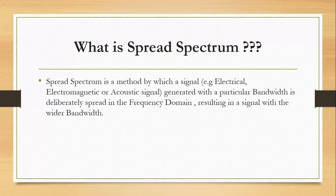So now, what is spread spectrum? Spread spectrum is a method by which a signal—it can be electrical, electromagnetic, acoustic, anything—which is generated with a particular bandwidth is deliberately spread in the frequency domain. So the original signal which we're supposed to transmit is deliberately spread over the frequency domain, and the name itself suggests spread spectrum. We are spreading the spectrum of the signal, resulting in a signal with a wider bandwidth.